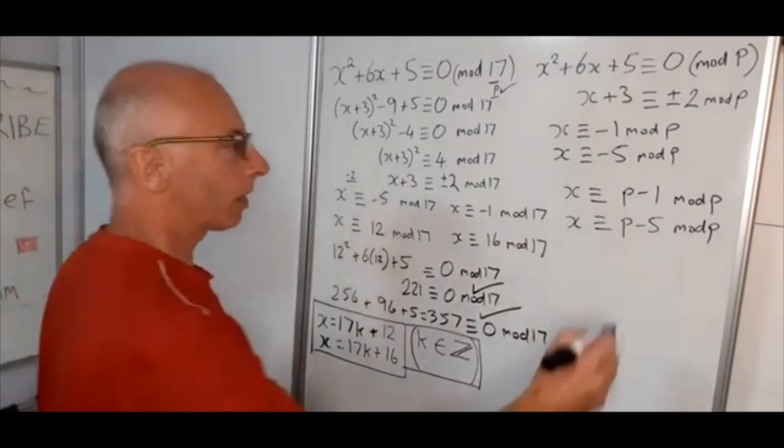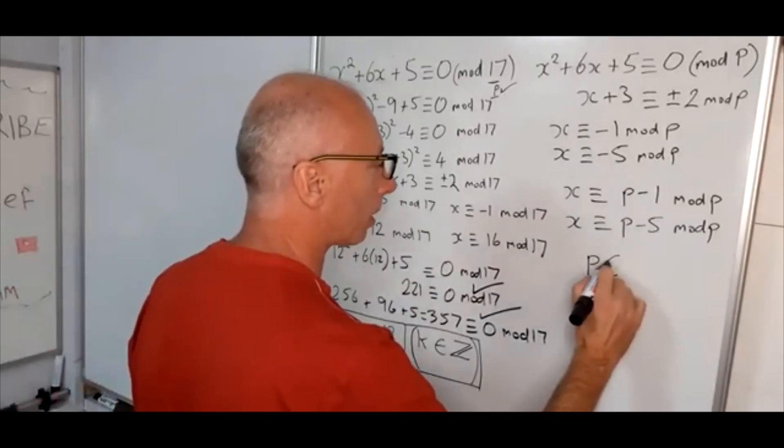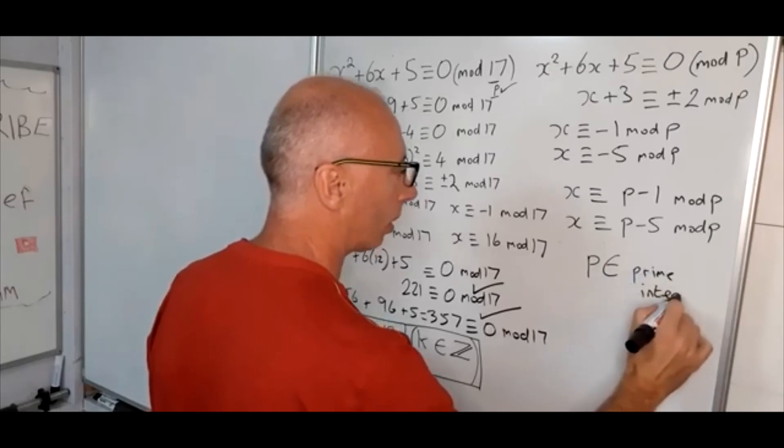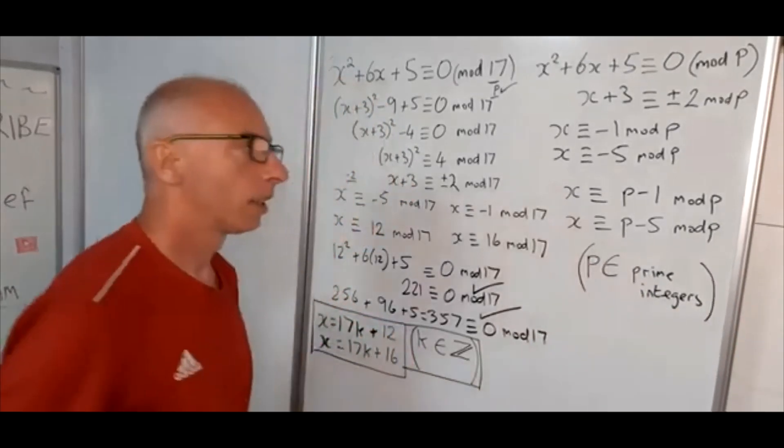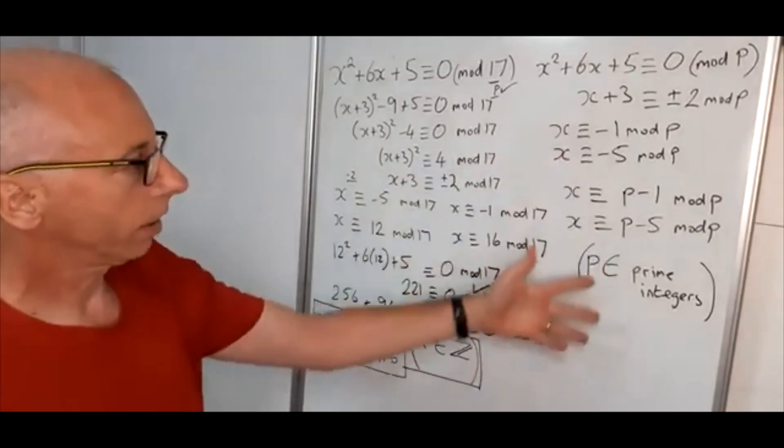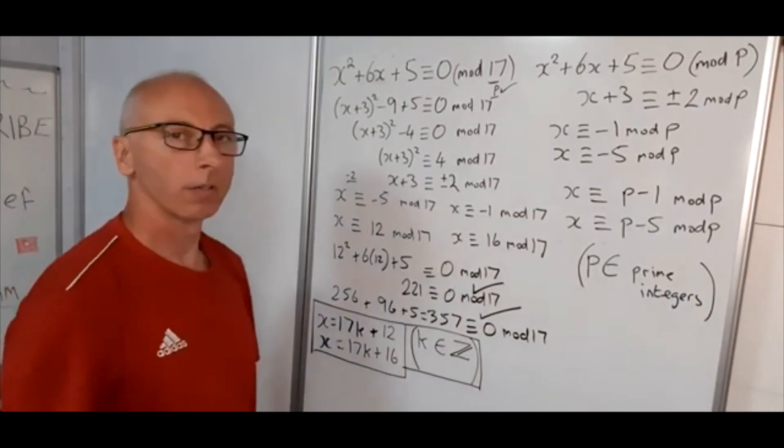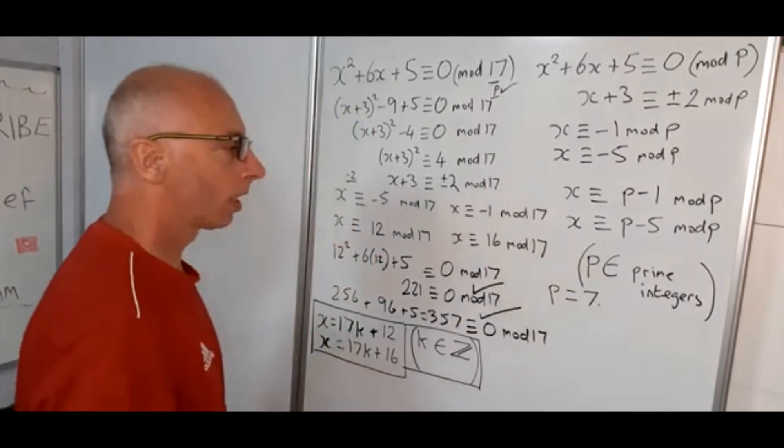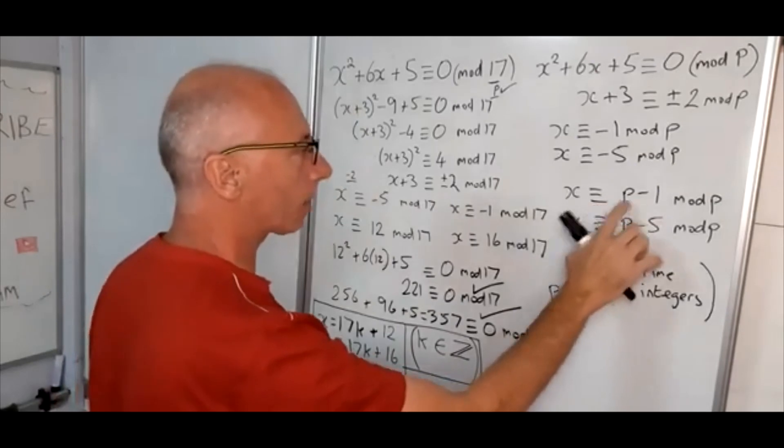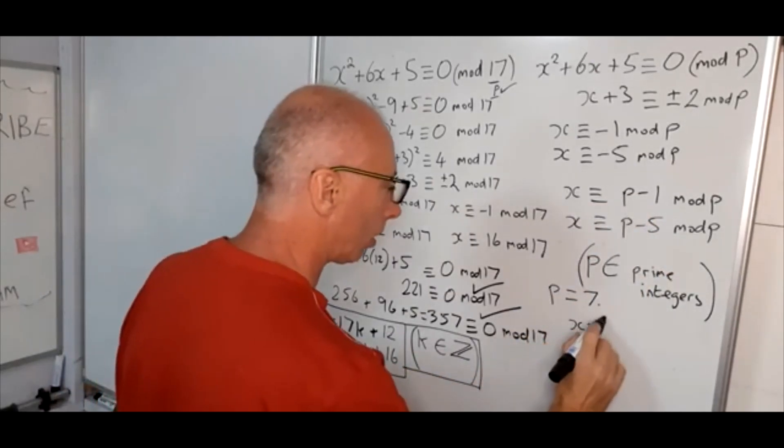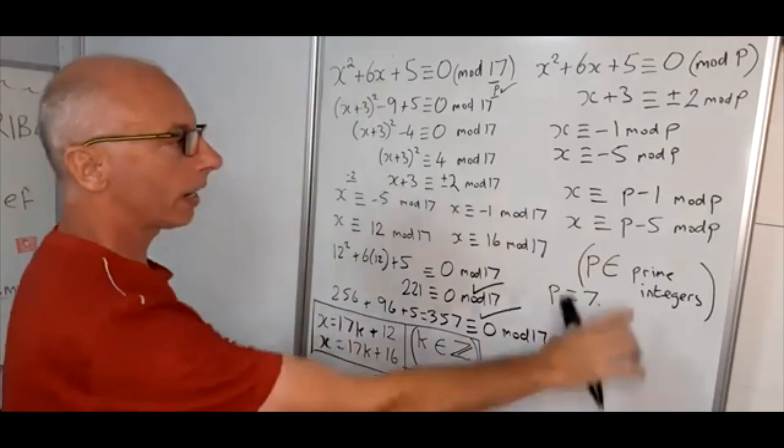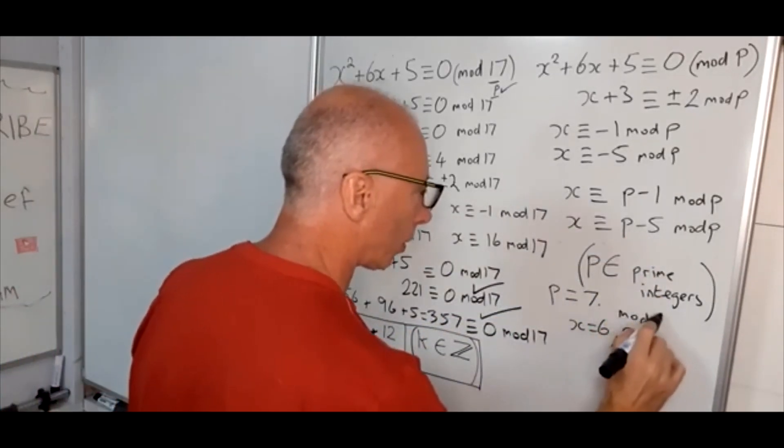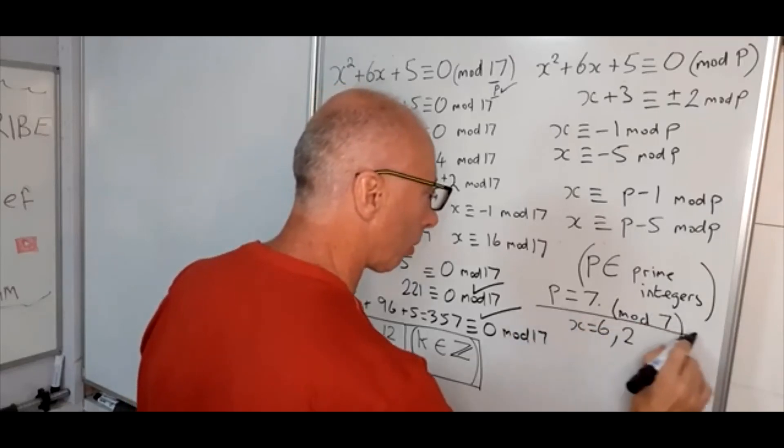So basically this will work for all, basically p is in the set of prime integers. That will be the case. Okay. So let's test our general solution here. So a prime number, let's pick 7. So let our prime number equals 7. So therefore what we're saying now, that x will equal 7 minus 1, which is 6. Or x will equal 7 minus 5, which is 2. So this is for mod 7. Okay. That's what we're working on now.